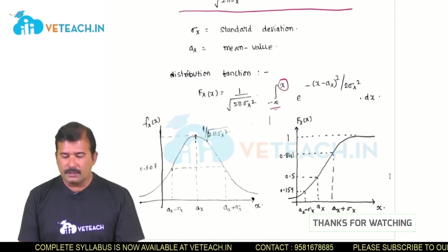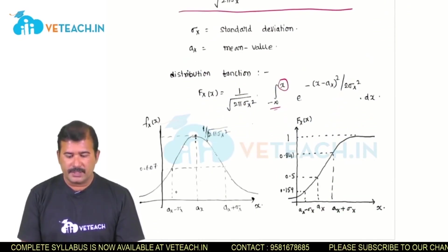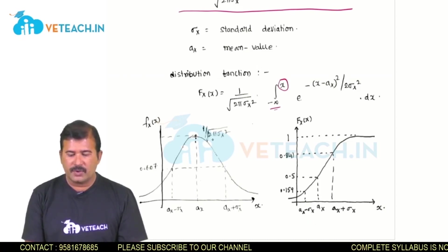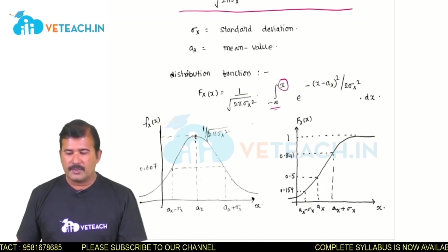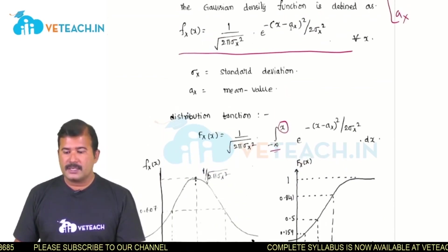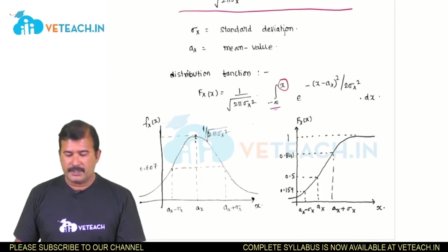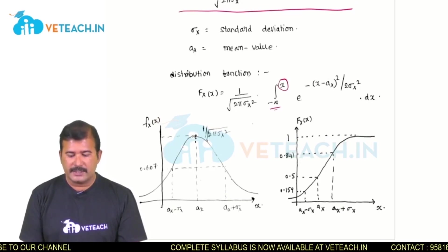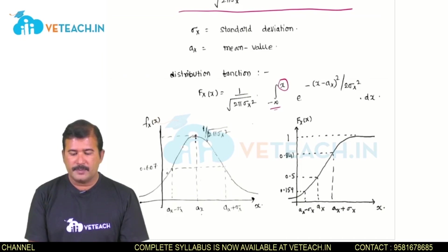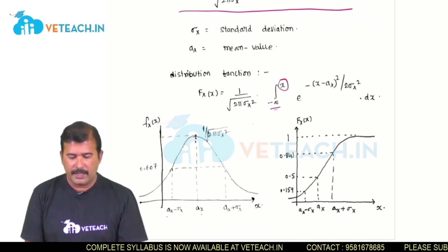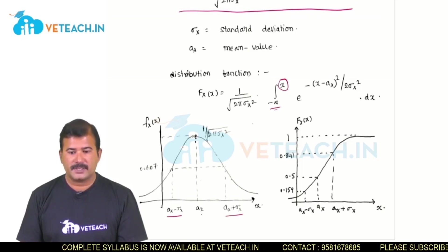Looking at the graphical representation of the density function, it is a bell-shaped function. The maximum value of this function is 1 by square root of 2 pi sigma x squared. The maximum value occurs at x equals to Ax, that is at the mean value. The graph falls to 60.7 percent of its maximum value at Ax minus sigma x and Ax plus sigma x.